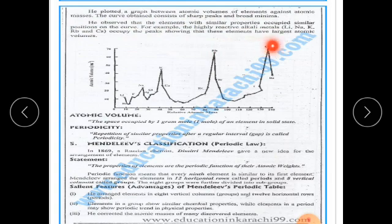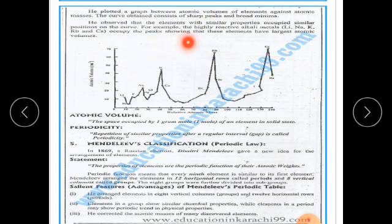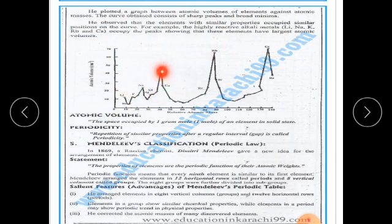— lithium, sodium, potassium, rubidium, and cesium occupy the peaks, showing that these elements have large atomic volume. We see high peaks for potassium, rubidium, and cesium. As atomic mass increases, atomic volume further increases. So we see atomic volume increasing with atomic mass.